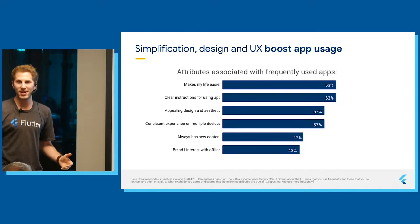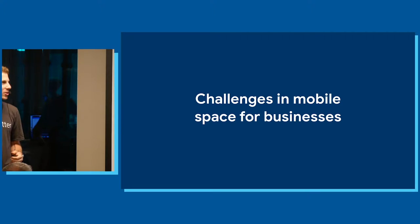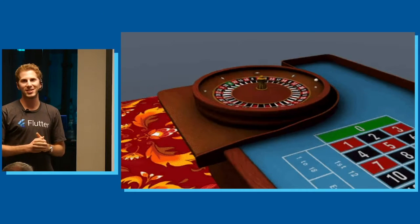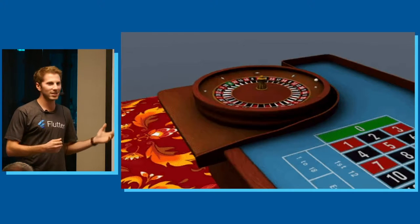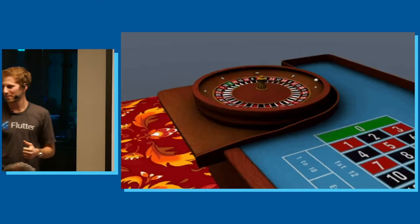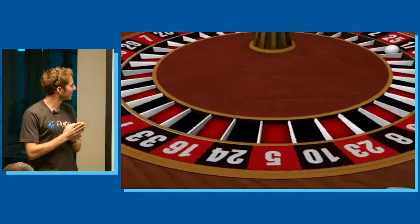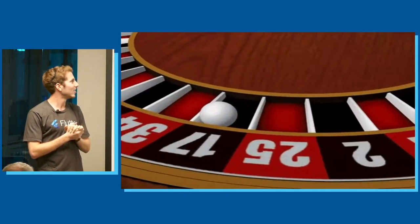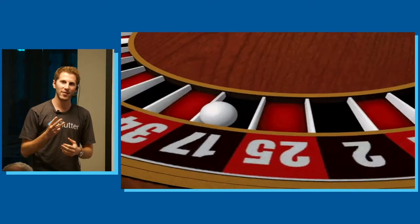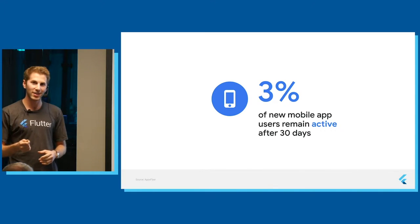None of you would be here today if there weren't challenges associated with mobile apps. I want to play a game to visualize a few of those challenges. Can someone say a number from 0 to 36? — 13. Let's spin. The number called is 13, but we got 17. You didn't get that right, but don't worry — you only had a 3% chance of getting that number right. According to AppSplider, only about 3% of new mobile app users will remain active after 30 days. So if a random app has 100 people download it, only an average of 3 will remain active.